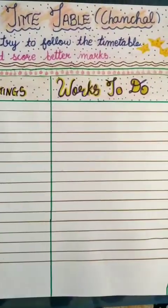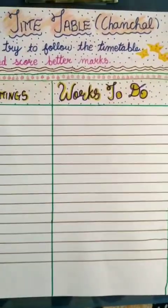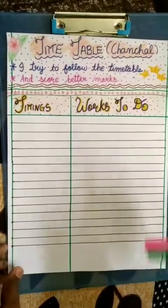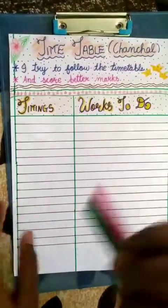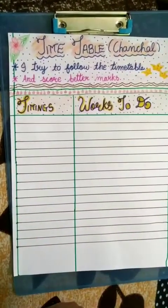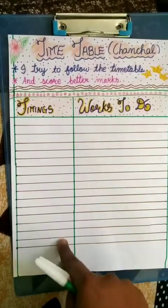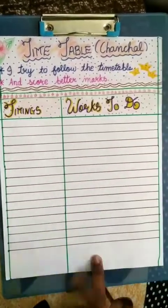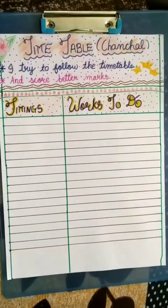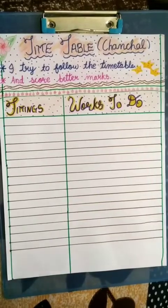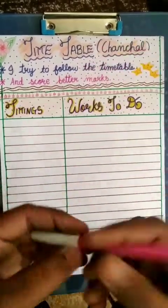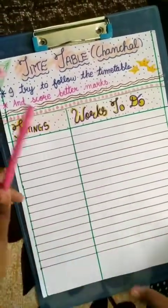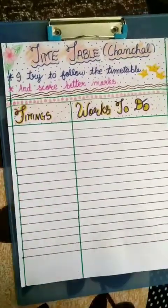As you can see, I have already prepared one timetable. On the front page of this timetable, I have written my name and two lines to motivate me. Here I am going to write the timings, and here I am going to write the activities that I do. For this writing we use a pink color pen.